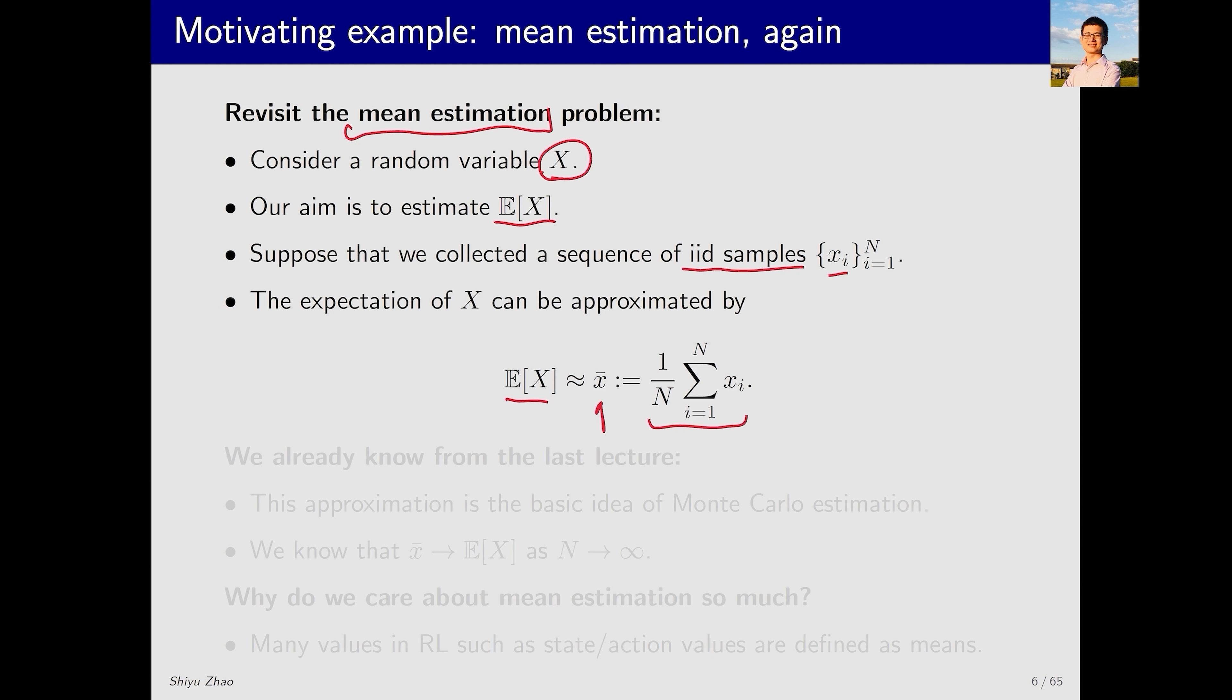This x-bar is considered an approximation of the expectation. We already discussed this in the last lecture, and it is the basic idea of the Monte Carlo method. We also know that the average will gradually converge to the true expectation when we have sufficient data.